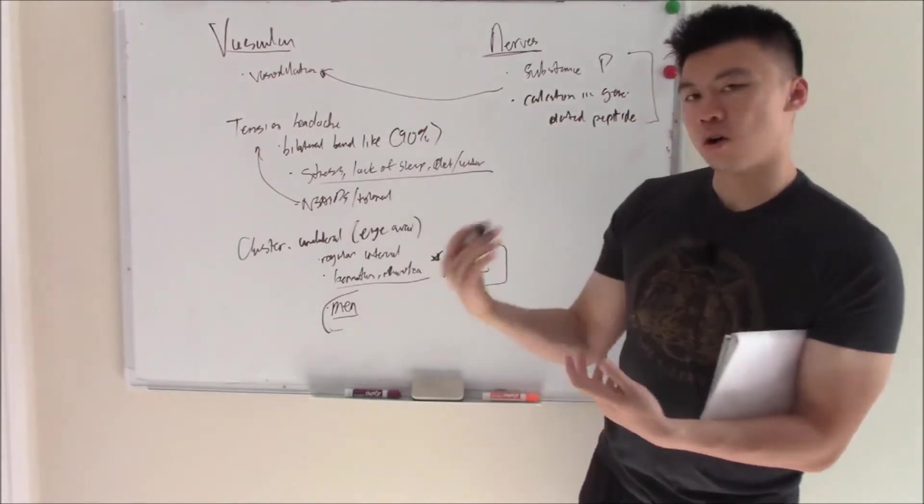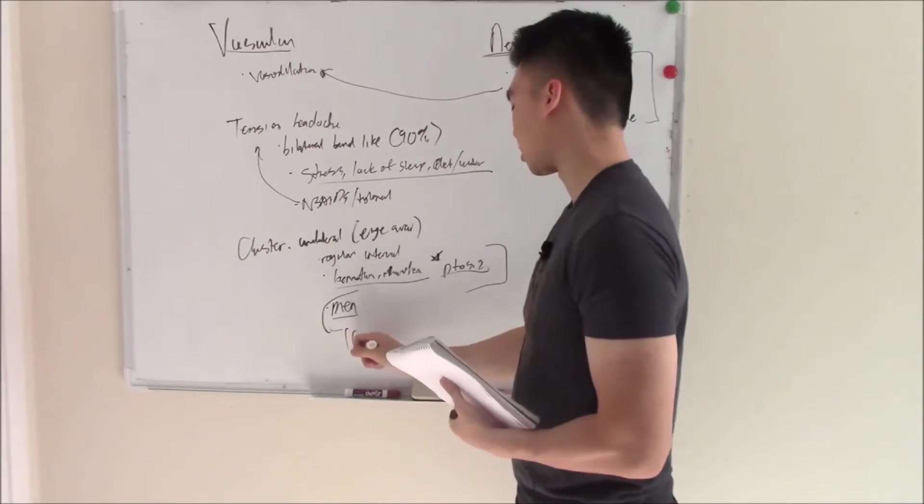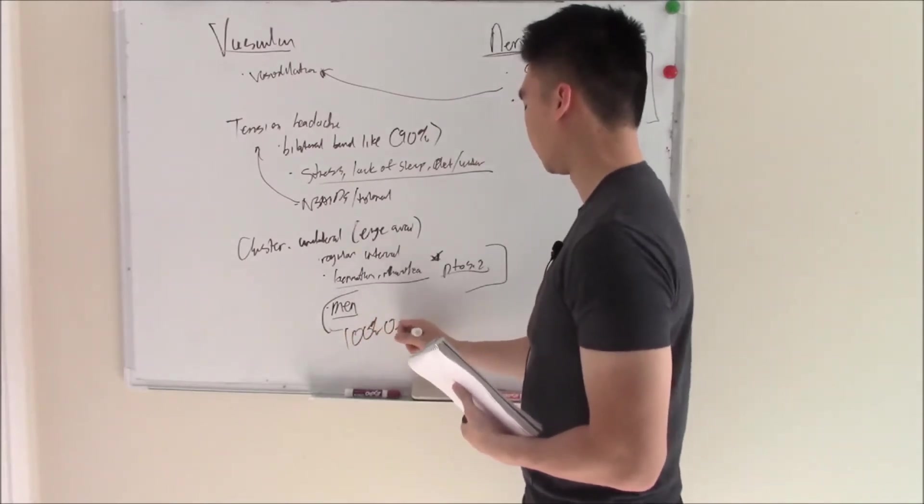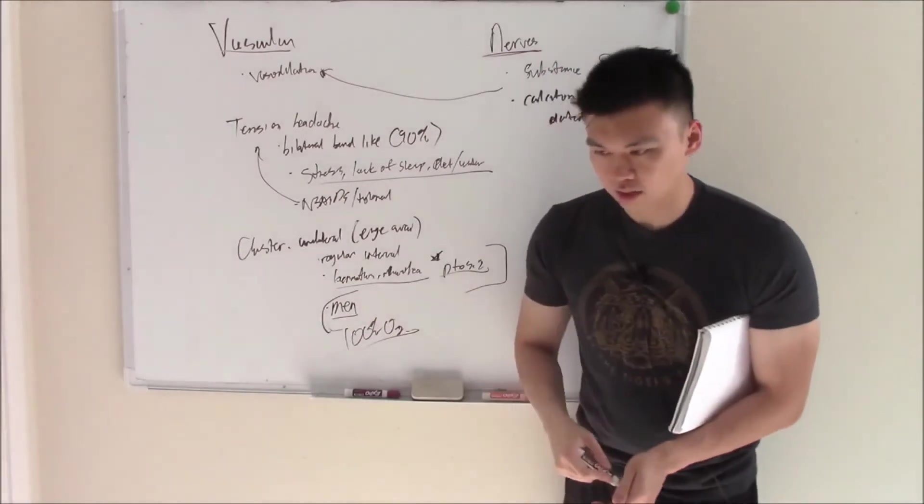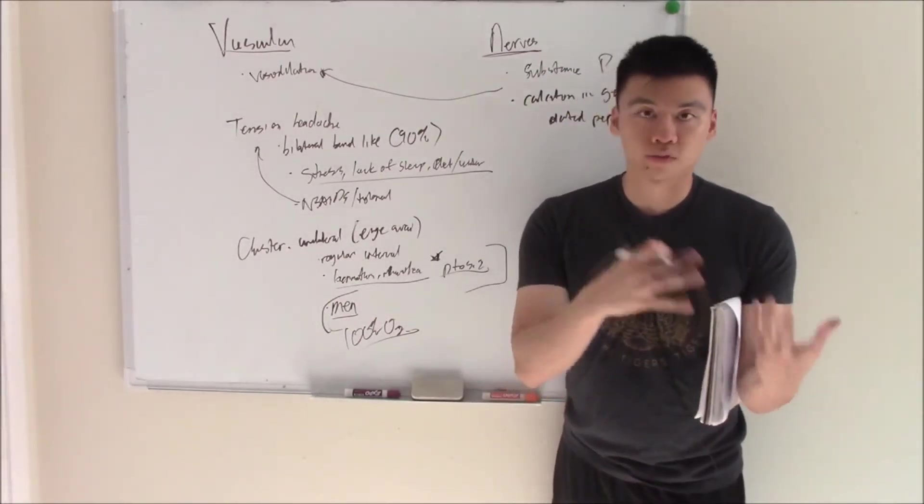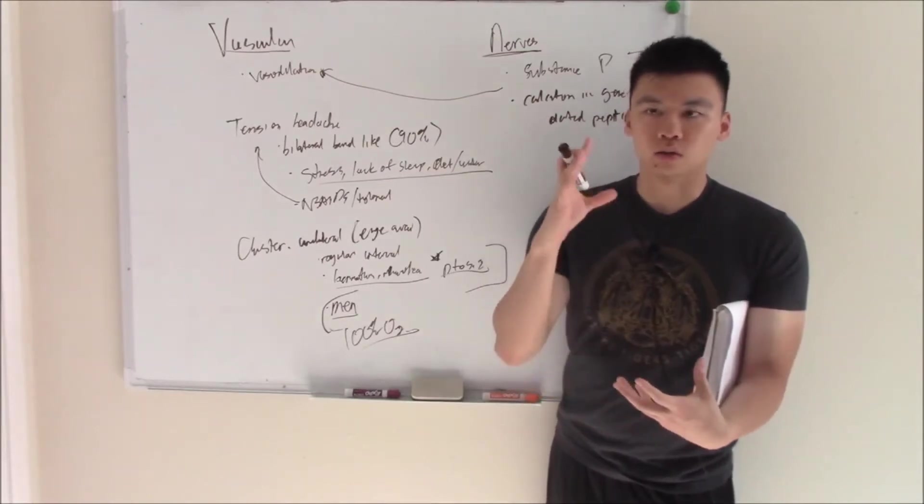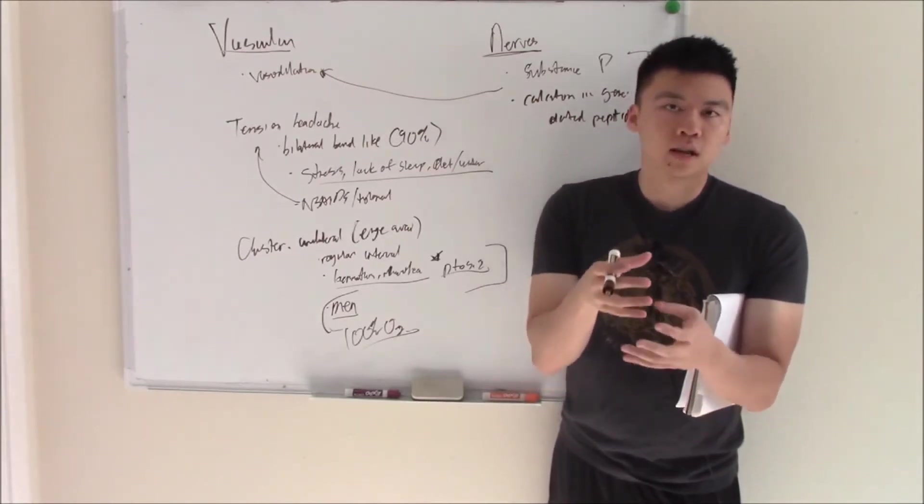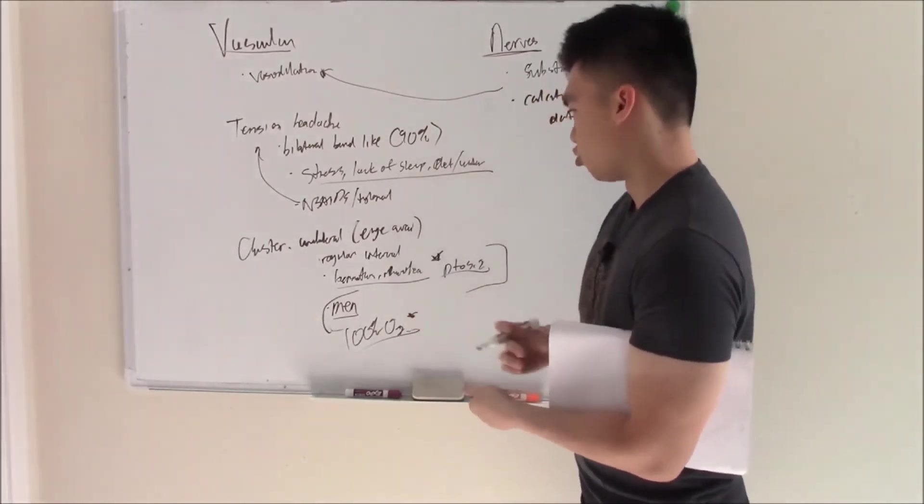Lacrimation, rhinorrhea, ptosis, all that good stuff. How do you treat it? Well, in an acute attack, you can give 100% oxygen. What's the theory behind that? 100% oxygen, if you remember from talk about cerebral perfusion pressure, it will lower the amount of CO2 and it'll cause vasoconstriction. So you kind of constrict that vessel that's dilating out of control.